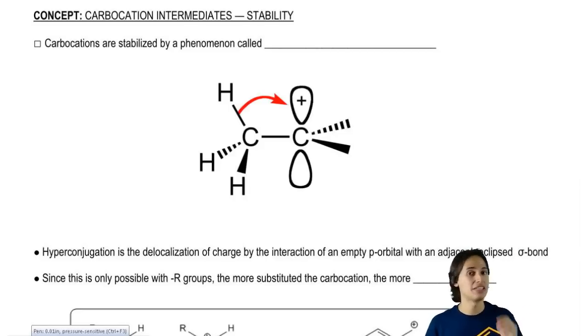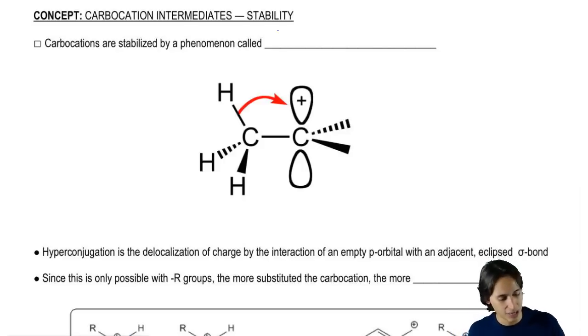Carbocations are going to be stabilized by something. There is something that can make that positive charge a little bit better and that's something called hyperconjugation.